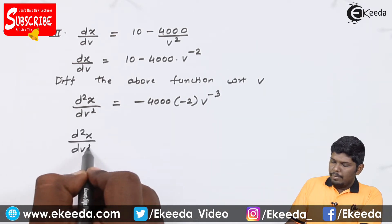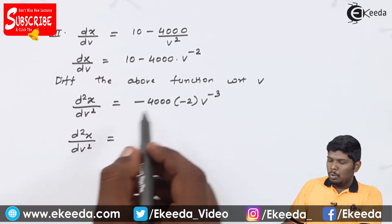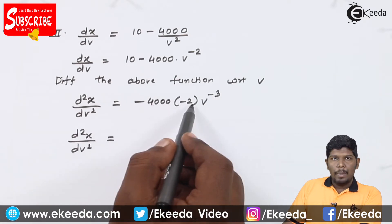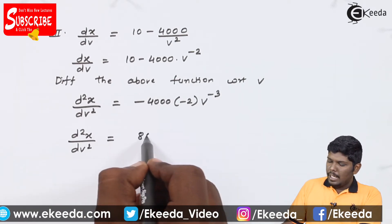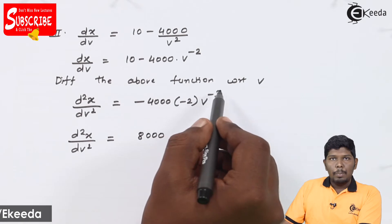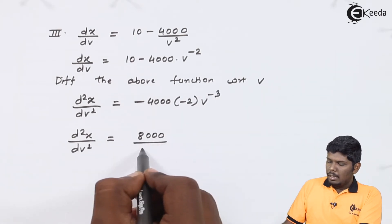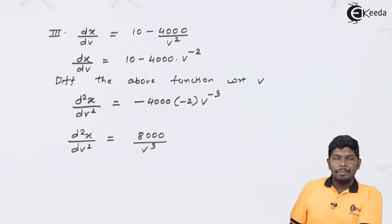d²X by dV square will further give you minus 4000 into minus 2, which gives plus 8000. V raised to minus 3 can be written as 1 upon V raised to plus 3.